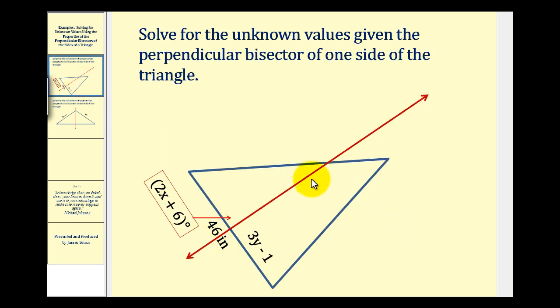So here we're given a triangle and this red line is the perpendicular bisector of this side of the triangle. Remember that that means that it's perpendicular to this side of the triangle and that it also bisects this side of the triangle.